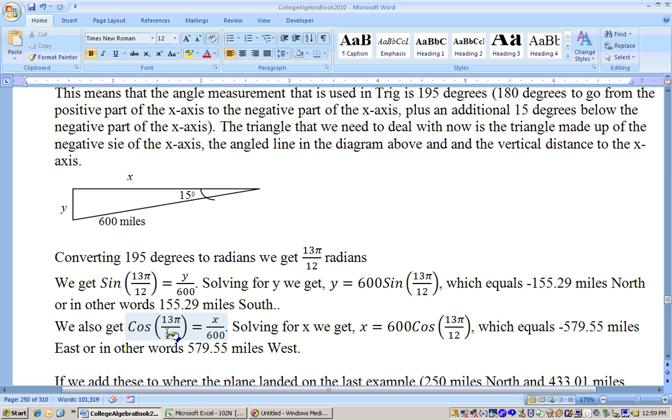And then to get the east, that would be adjacent over hypotenuse. So, that's cosine of that angle measurement or radiance. That's 195 degrees there is equal to x over 600. Cross multiply, 600 times the cosine of 13 pi over 12 or 195 degrees is going to give you negative 579.55 miles or, in other words, 579.55 miles west.